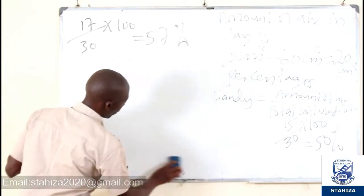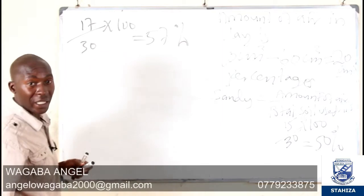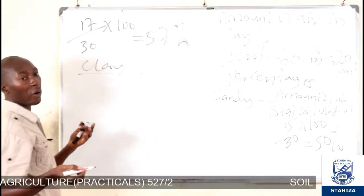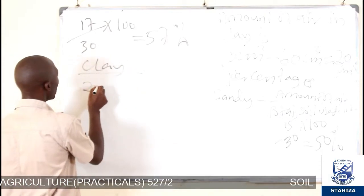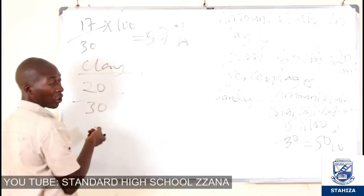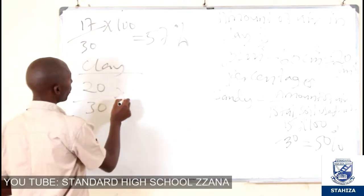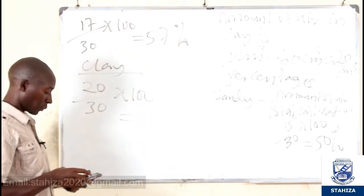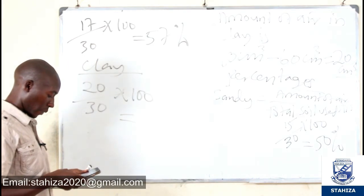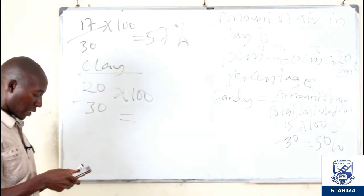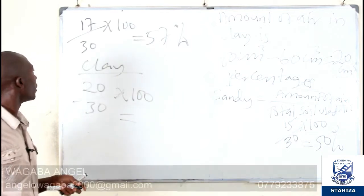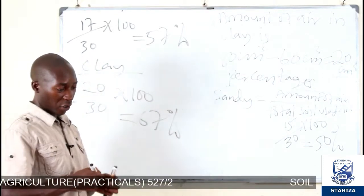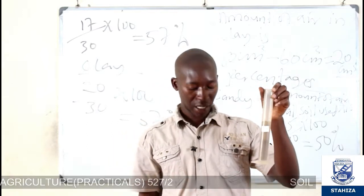Now we are going to get the percentage of air in clay. For clay, we take the amount of air, which was 20, out of 30 total soil used, times 100. So for clay, 20 out of 30 times 100 gives us 67 percent. Meaning that this sample of clay had 67 percent air.